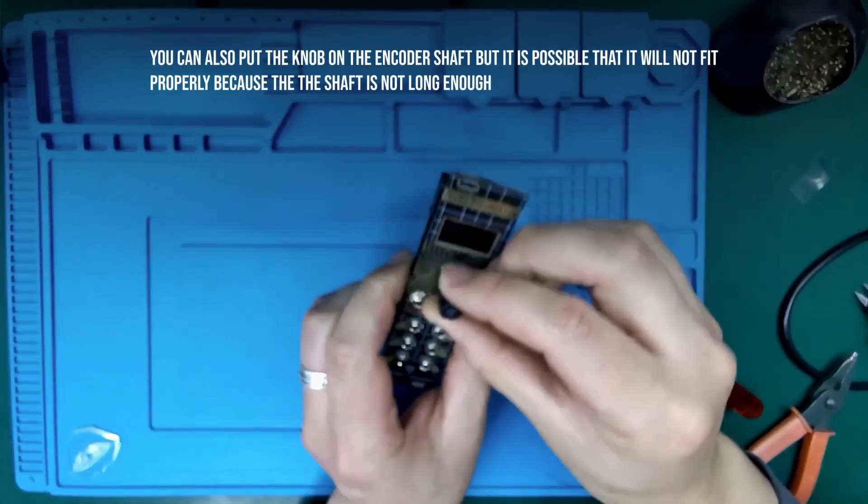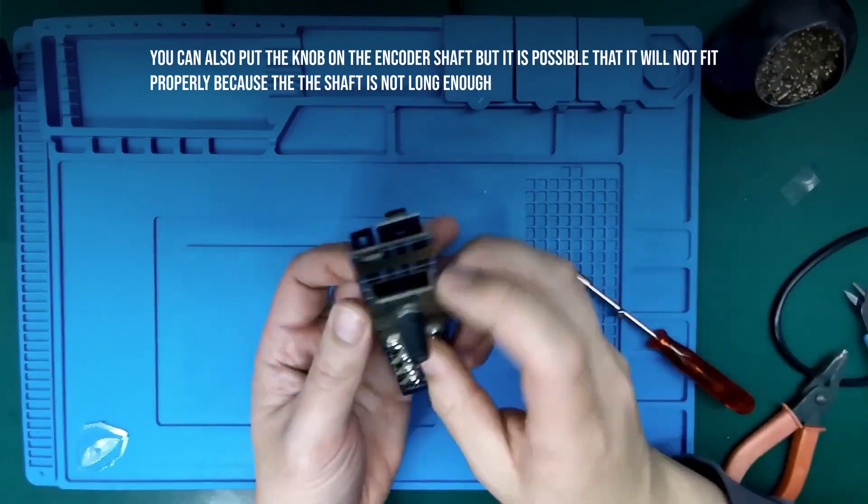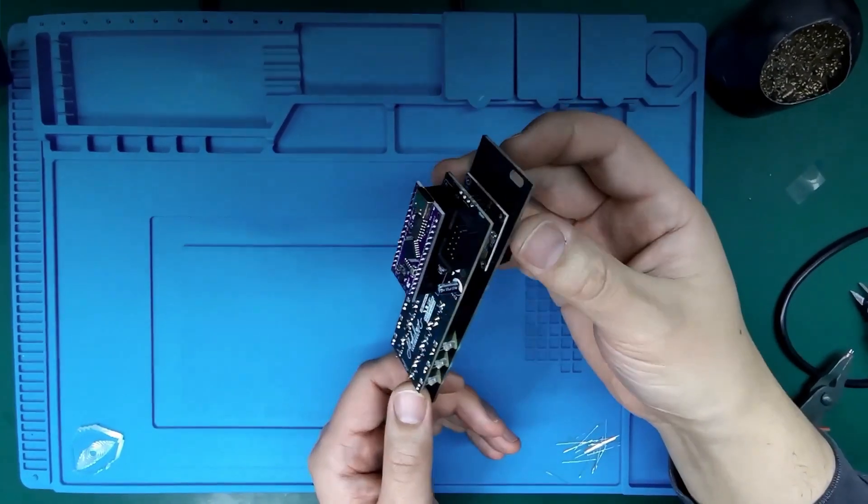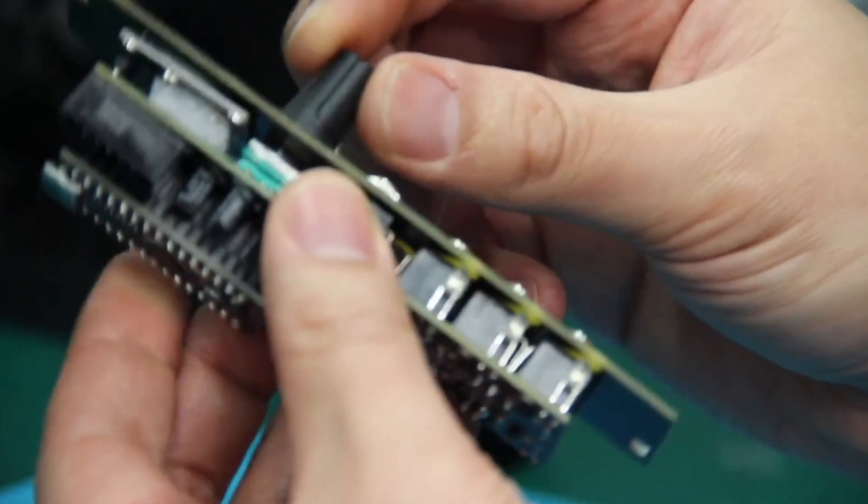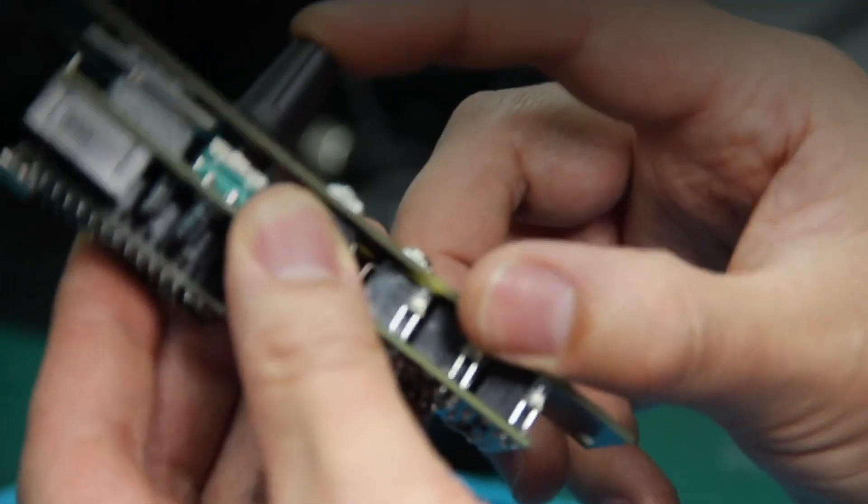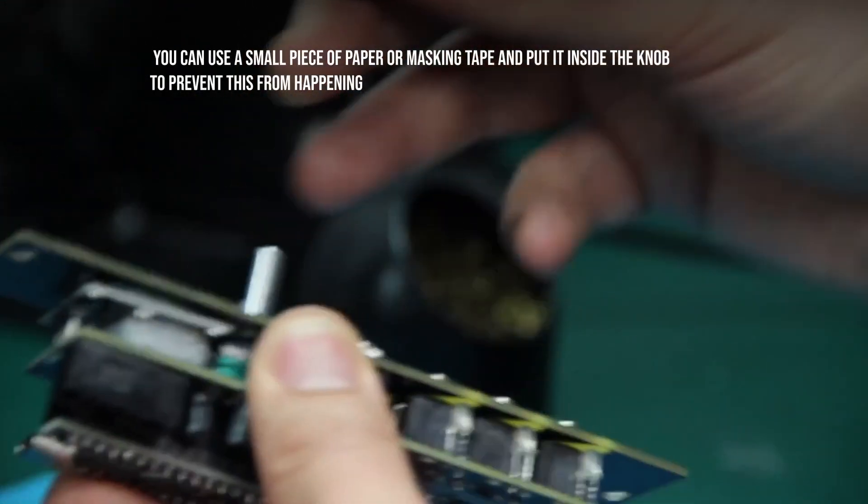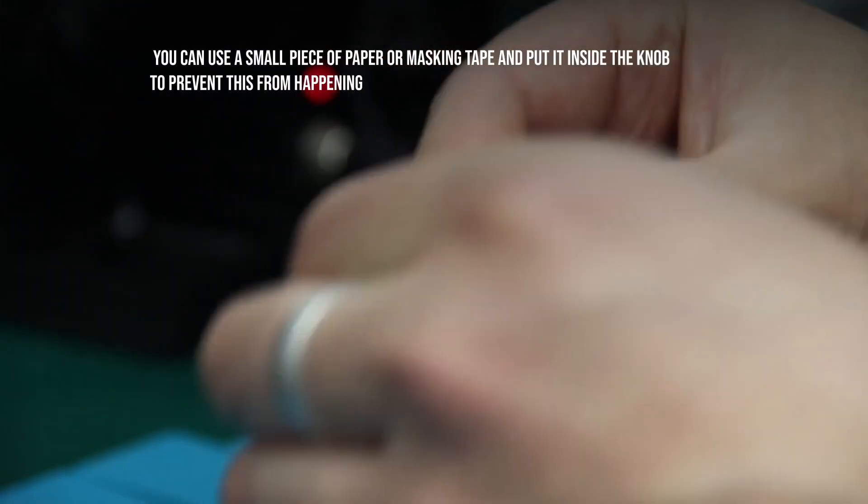Unfortunately, this type of knob tends to slip too far down the shaft of the encoder. This prevents the push button from working properly. To fix this issue, I will place a piece of paper or something similar inside the knob, so that the shaft pushes against it.